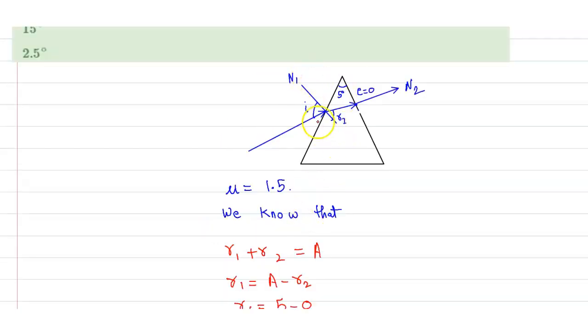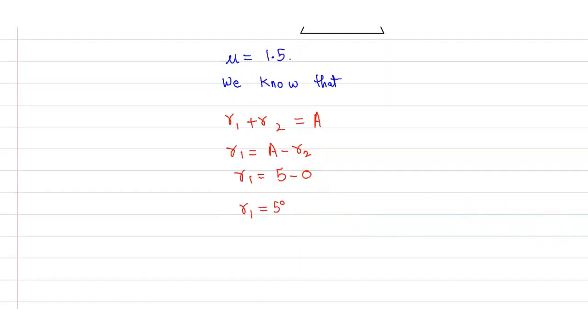That means the ray refracted by 5 degrees when it enters the prism. So if we apply Snell's law, let's apply Snell's law. Snell's law says the ratio of sine of angle of incidence and the angle of refraction is always constant.